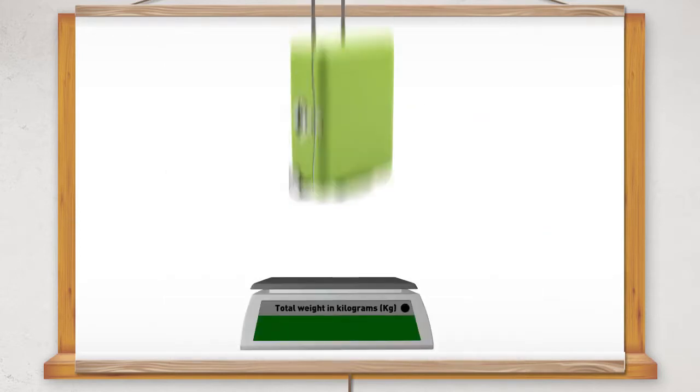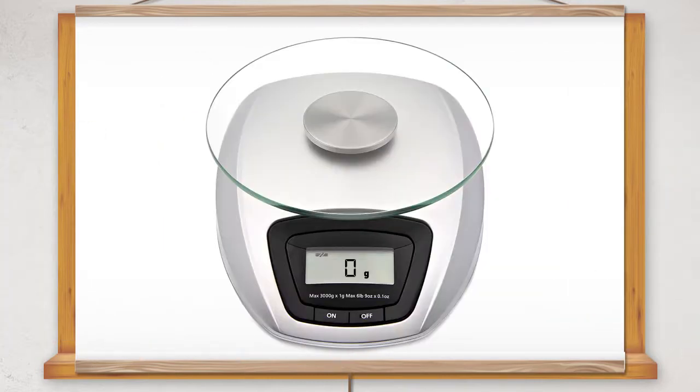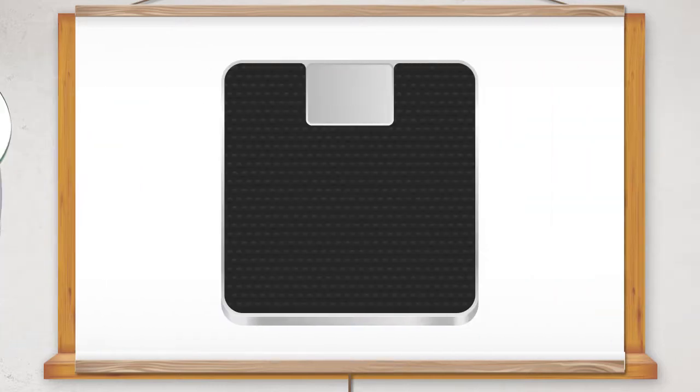Digital scales display the weight of an item as a number. They usually provide you with the option of measuring an object in a variety of different units. For example, on a digital kitchen scale, you can choose to measure in grams or kilograms. On bathroom scales, you can choose to measure in kilograms or imperial measures of stones and pounds.